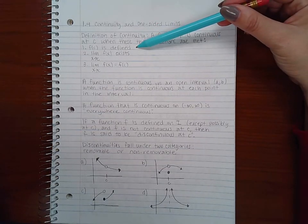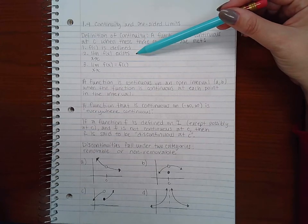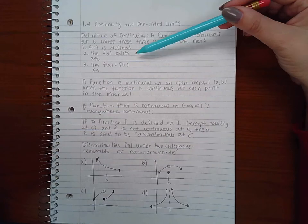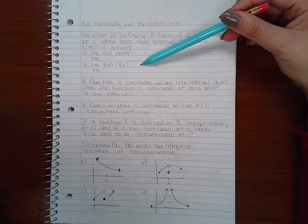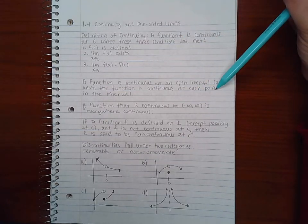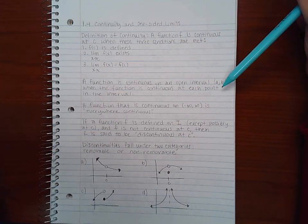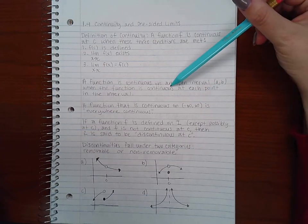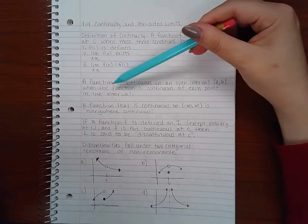1 f of c is defined, 2 the limit of f at c exists, and 3 the limit of f at c is the value f of c. A function is continuous on an open interval a b when the function is continuous at each point in the interval.